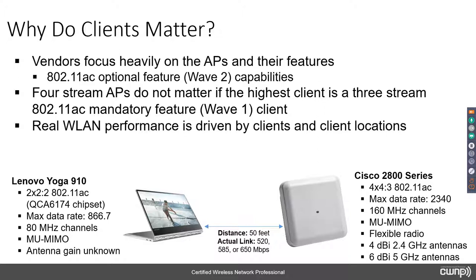This is probably the most important takeaway from today's presentation. You have to extrapolate beyond just one Yoga 910 — you might have eight Yoga 910s connected to an AP along with four iPhones, three Android phones, two iPads, two Android tablets, three other laptops, and even some door locks. All those devices use airtime, so actual throughput for the cell will be far lower than 585 or 650 Mbps.